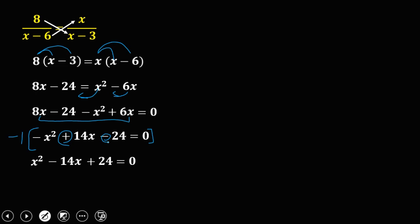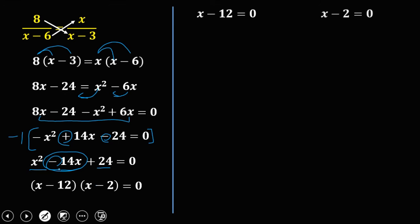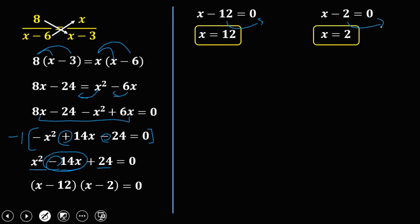We now have a quadratic equation, which we can solve by factoring or the quadratic formula. For factoring: factors of x squared are x times x, and factors of 24 — we use 12 times 2 because 12 plus 2 equals 14, matching the middle term. Since the middle term is negative, both factors are negative: x minus 12 equals 0 and x minus 2 equals 0, giving x equals 12 and x equals 2.